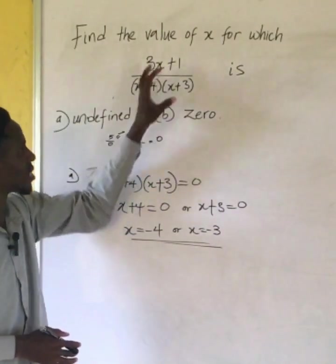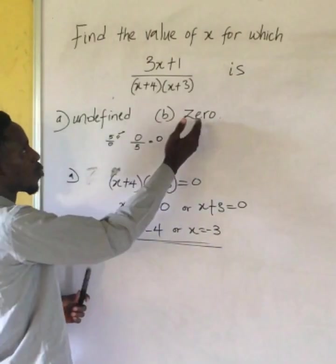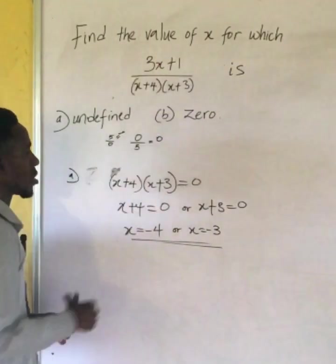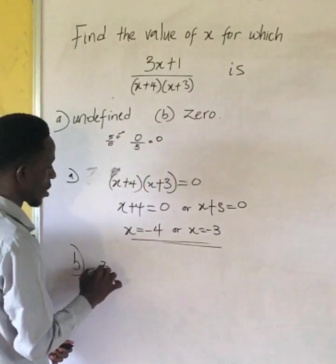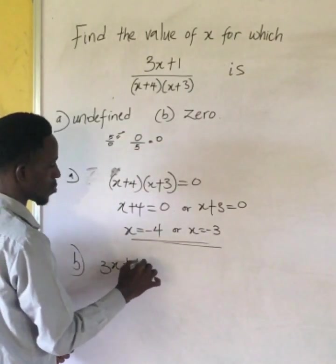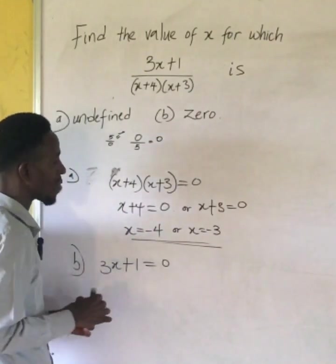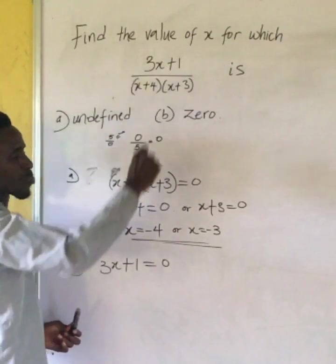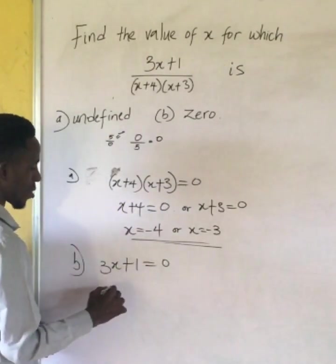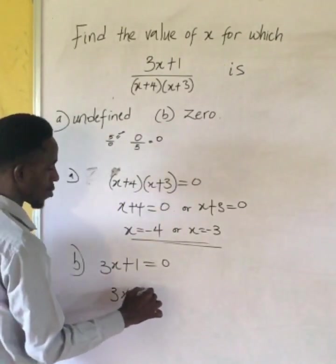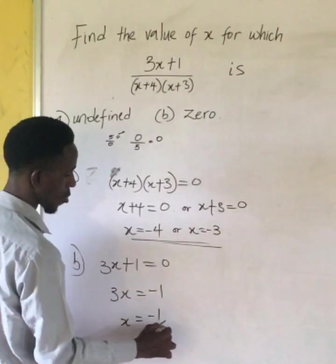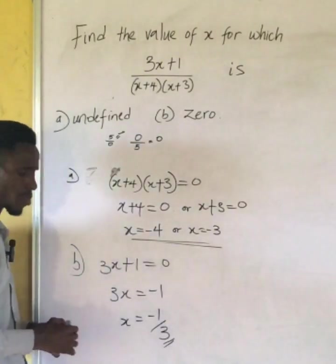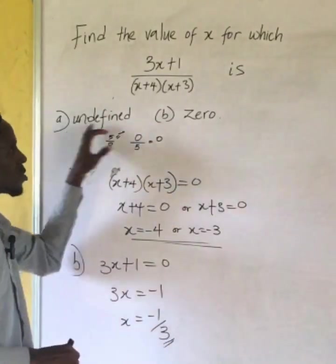And it can only be zero when the numerator is equal to zero. So that brings me to the big part of it that says the numerator must be equal to zero before this whole expression is zero. So getting my value for x here, my x is going to give me negative one over three. You see it's very simple once you know what these two things mean.